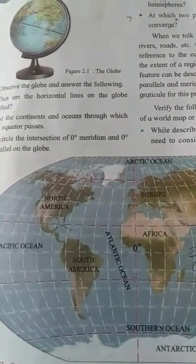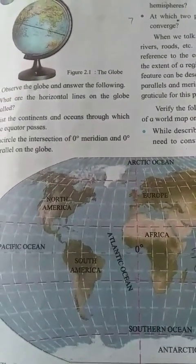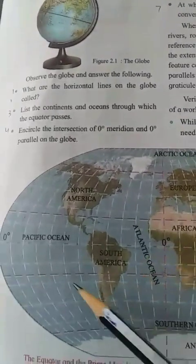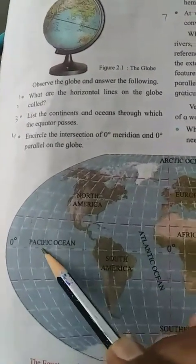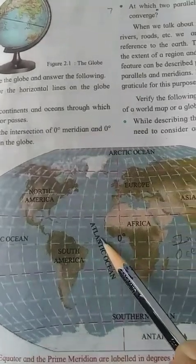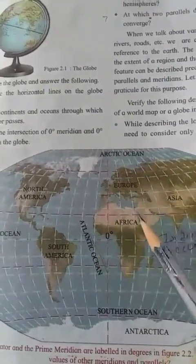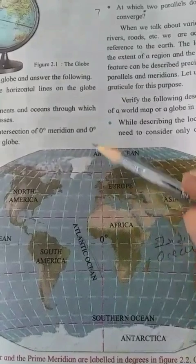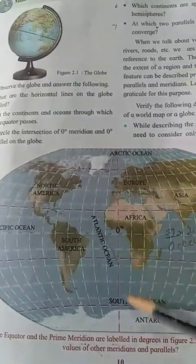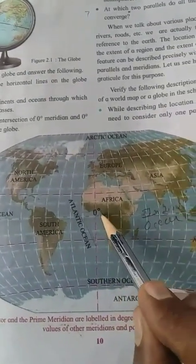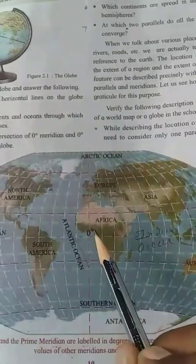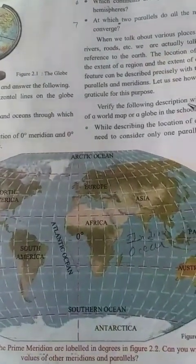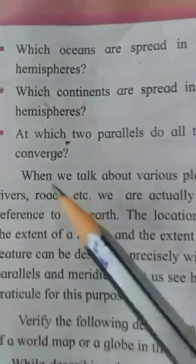The question is: which oceans are spread in all the four hemispheres? The Pacific Ocean and the Atlantic Ocean are spread in all four hemispheres — the Northern Hemisphere, the Southern Hemisphere, the Eastern Hemisphere, and the Western Hemisphere.